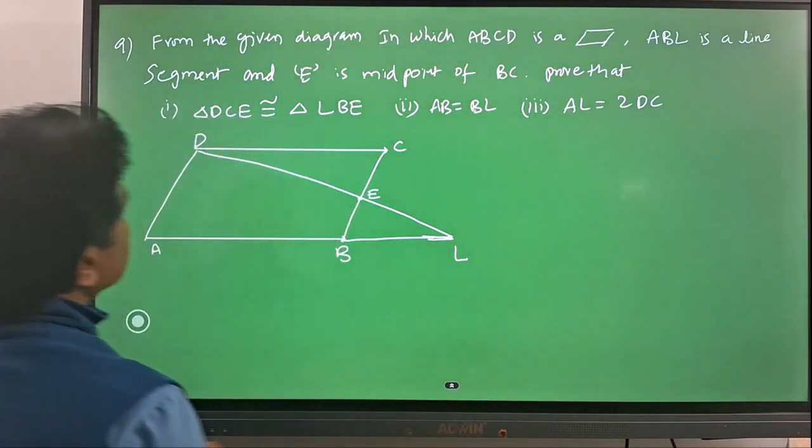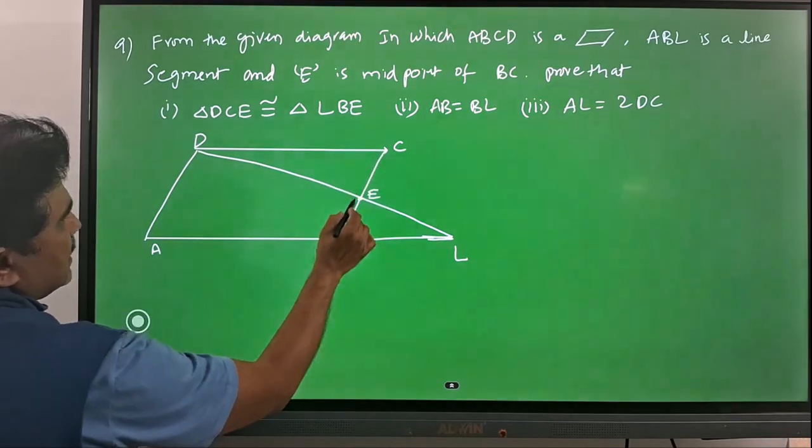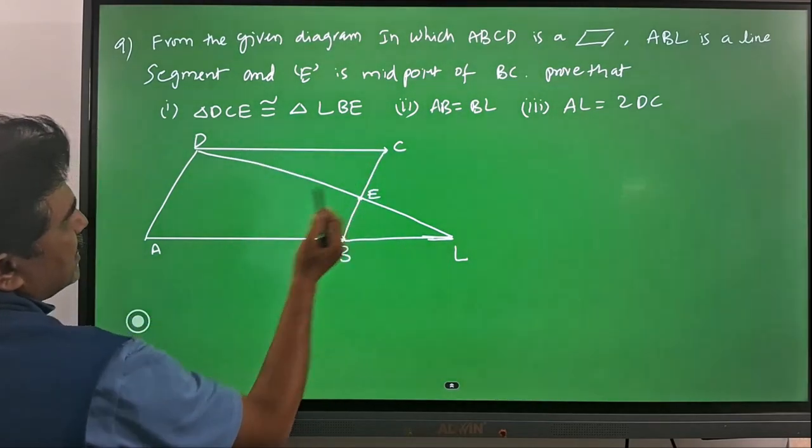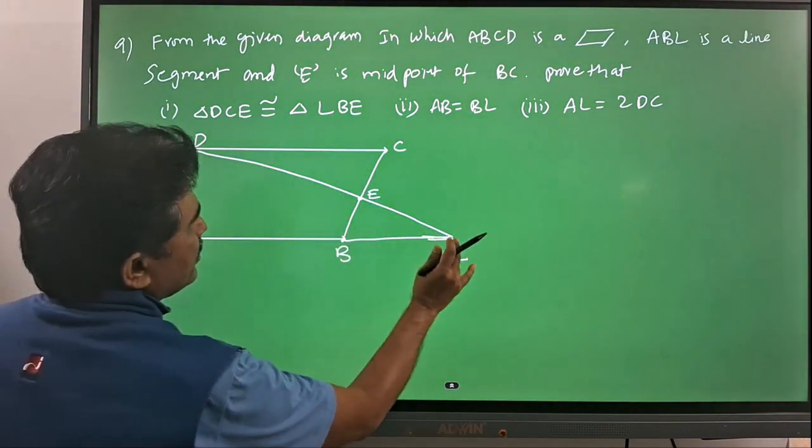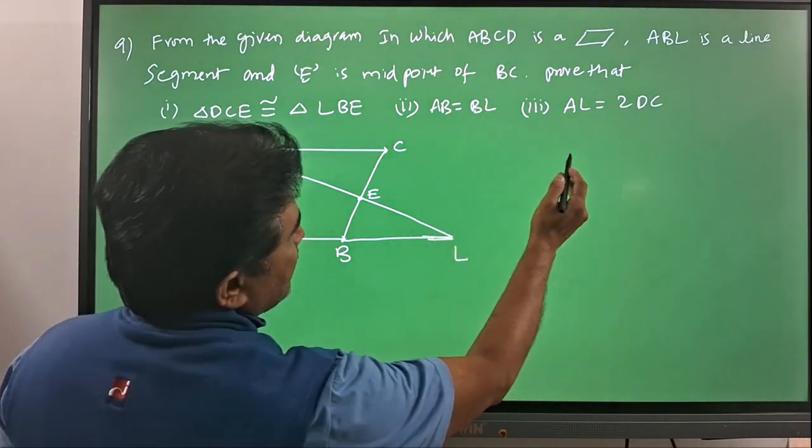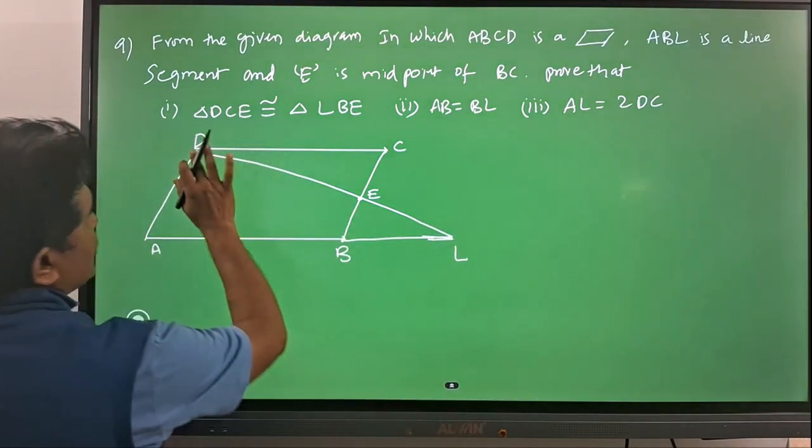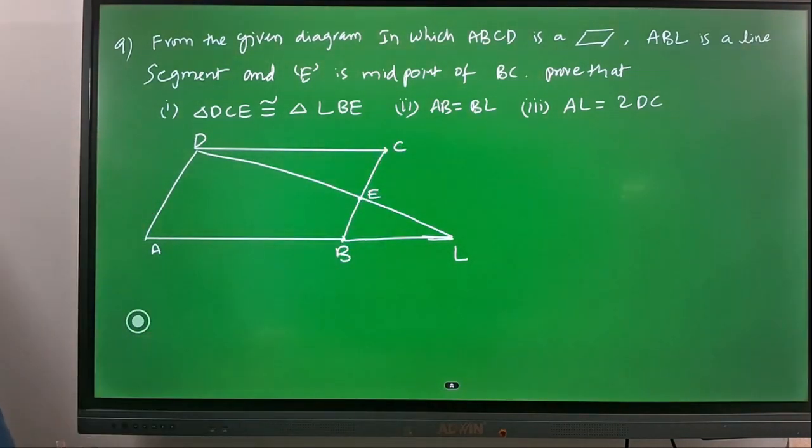Prove that triangle DCE is congruent to triangle LBE, and second, AB is equal to BL and AL is equal to 2DC. Both are the same. Let us prove this one.